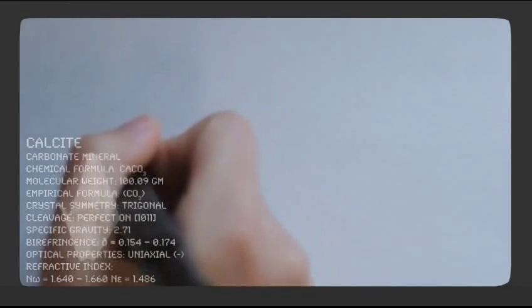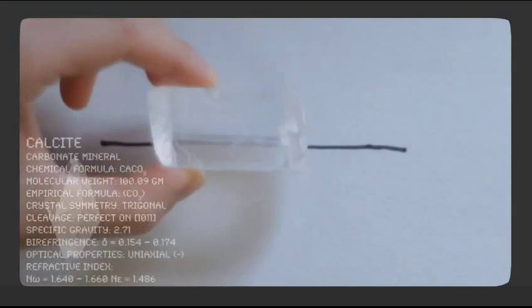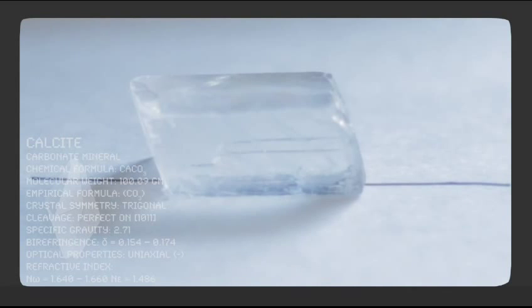Draw a line on a piece of paper. When a calcite mineral is placed on top, you can see two lines instead of one. This is because as the light ray, the drawn line, enters calcite, the single ray is split into two.